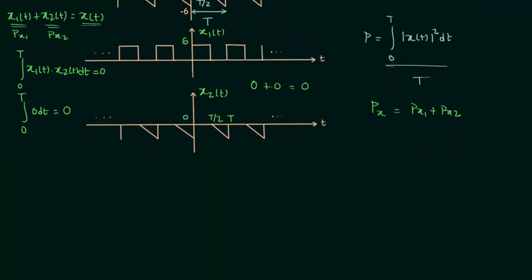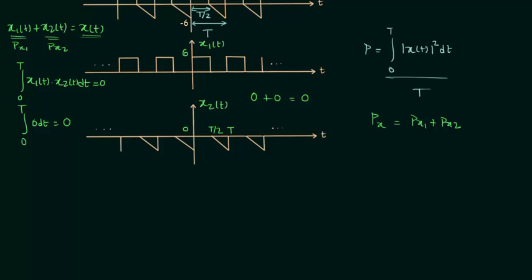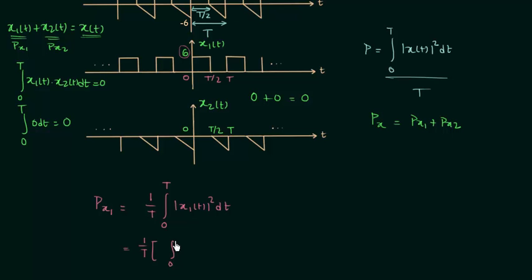The calculation of Px1 is straightforward: Px1 = (1/T)·∫₀ᵀ |x1(t)|² dt. From 0 to T/2, x1(t) equals 6, and from T/2 to T, x1(t) equals 0. Breaking the integral into two parts — integrating 6² from 0 to T/2 plus 0 from T/2 to T — and solving gives Px1 equal to 18 watts.